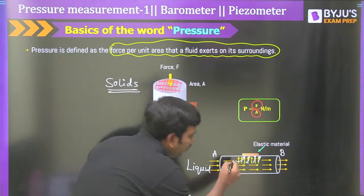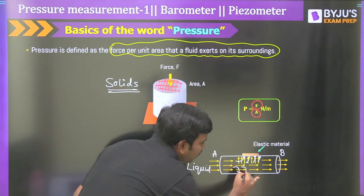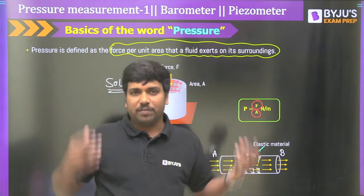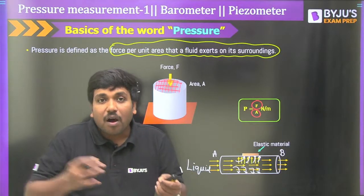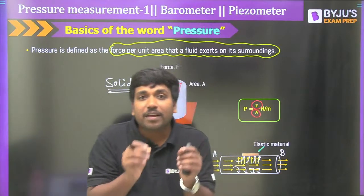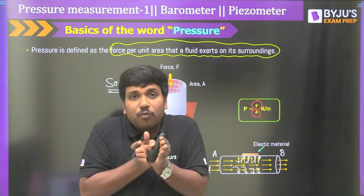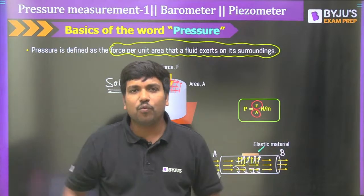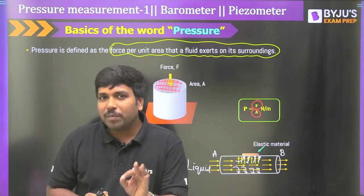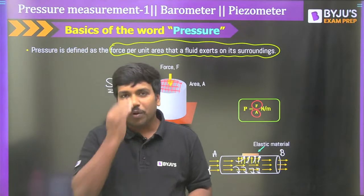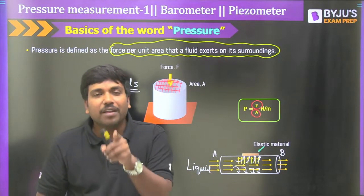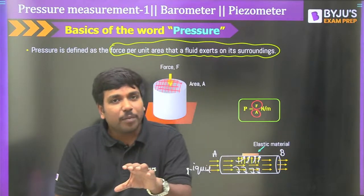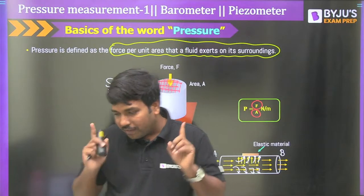Every fluid particle tries to apply pressure on the surrounding wall. This means the fluid is already carrying some amount of pressure during its journey — considered as pressure energy. Because of this pressure energy, fluid particles hit the wall on all sides. So you must understand pressure measurement in two ways: pressure applied on solids, and pressure applied by fluid particles — whether air or liquid.